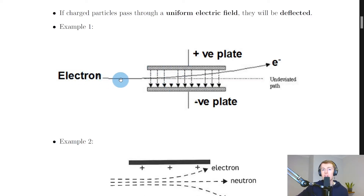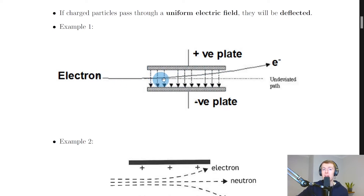The electron is travelling straight until it reaches the region between the two plates, at which point it's going to be deflected. The electron is negatively charged, so it's going to be repelled away from the negatively charged plate and attracted towards the positively charged plate on the top. That's why we get the bending upward for the electron. It then moves in a straight line again once it leaves the two parallel plates.